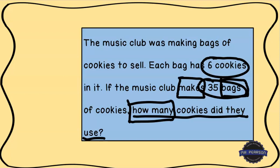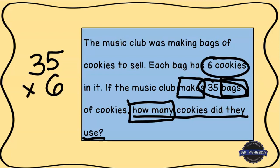Now I'm going to do some thinking. I know that they're making bags or groups of cookies, and it says that each bag has six cookies in it. That helps me understand this is going to be a multiplication problem, because multiplication is how many groups you have and how many pieces are in each group. In this case, we have 35 groups because that's how many bags there are, and there are six cookies in each bag. So we're going to multiply 35 times six.